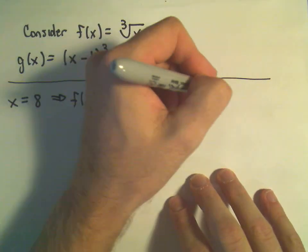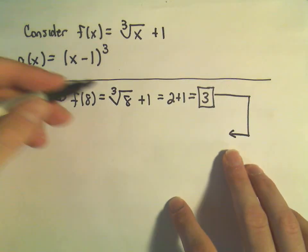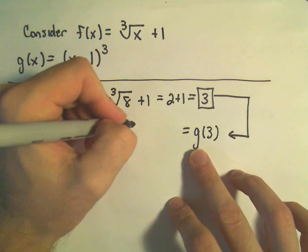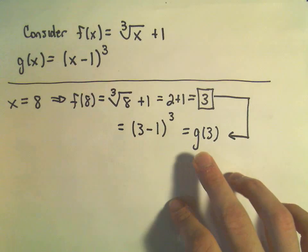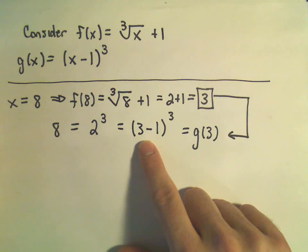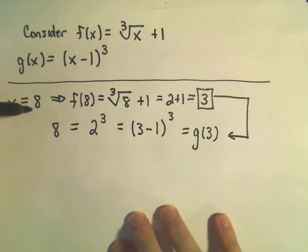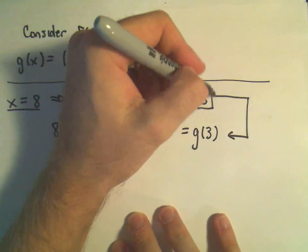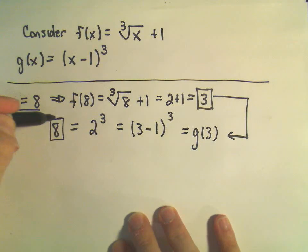Let's take this new number 3 and plug that into our other function g of x. So we would get g of 3. Well, g of 3 would be 3 minus 1 cubed. 3 minus 1 is going to be 2, so really we have 2 cubed and we get the number 8. So notice we start with x equals 8, plug it into one function, get some new number, plug that into the other one, and after we do the arithmetic we're right back where we started.